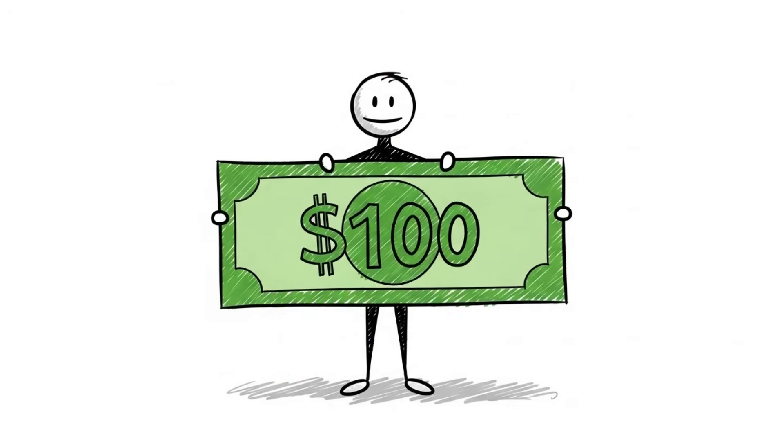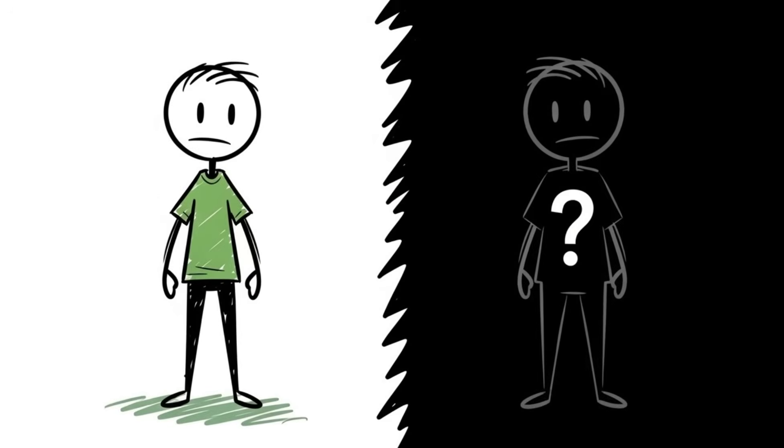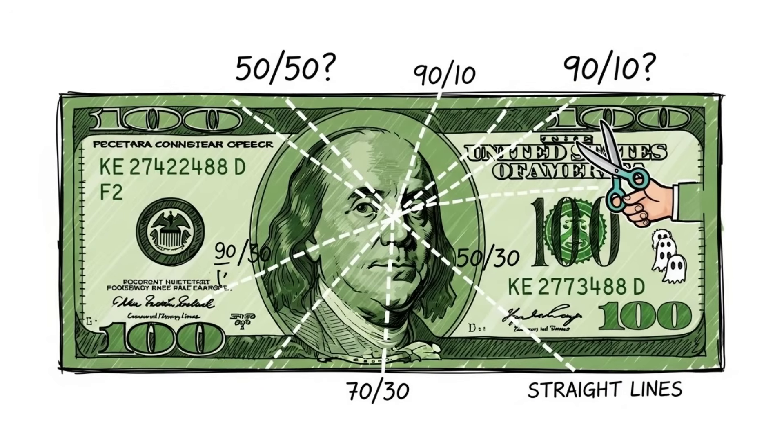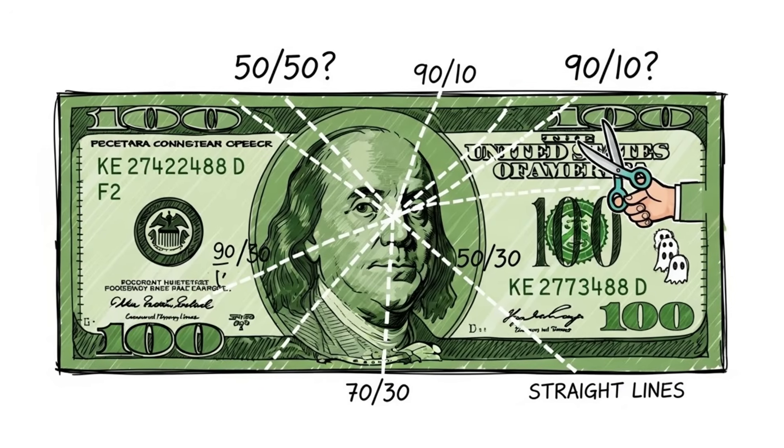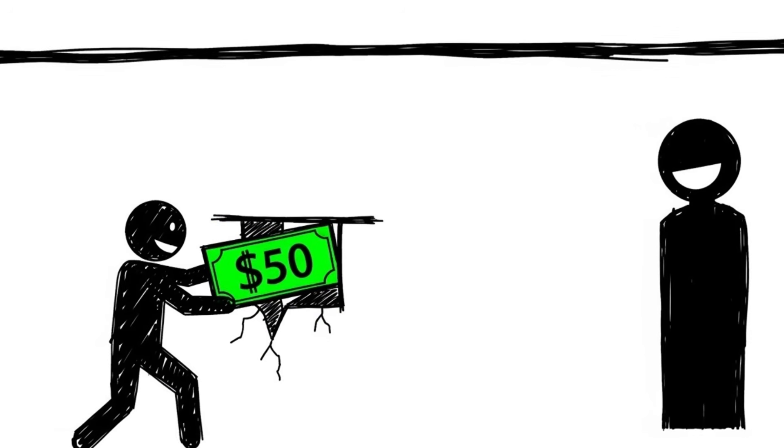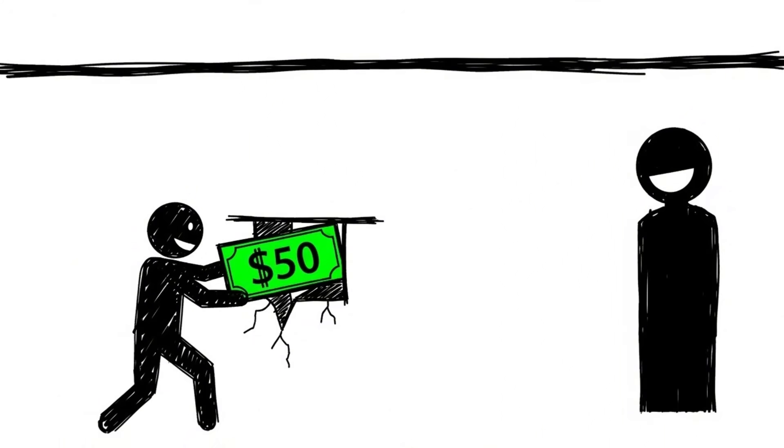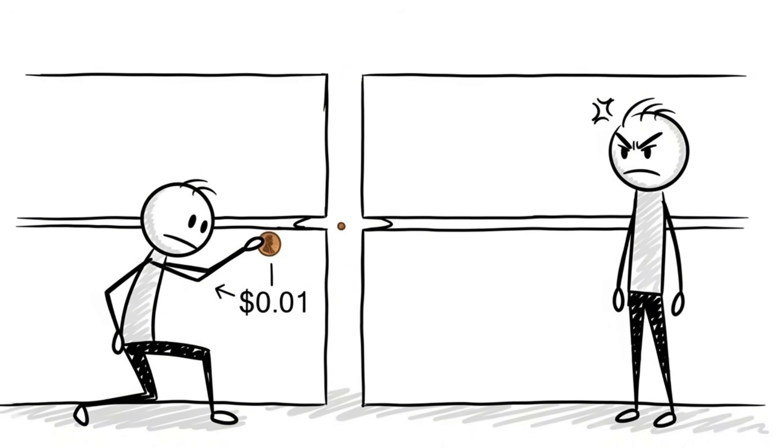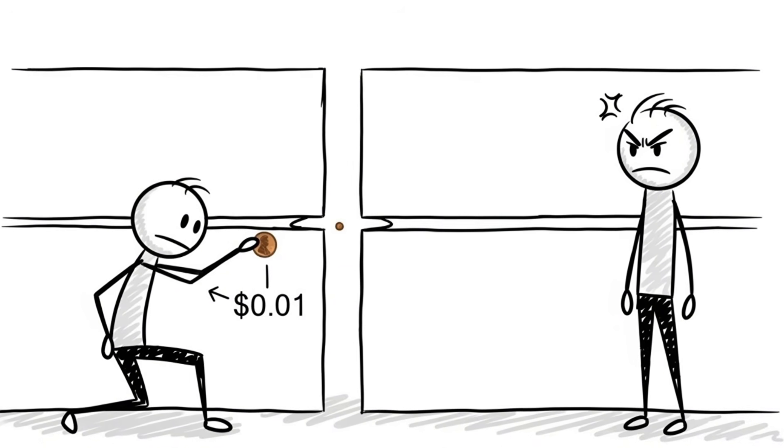Imagine I offer you $100, but there is a catch. I have to split this money with a stranger in another room. I can offer that stranger any amount I want, from one penny to the full $100. If the stranger accepts my offer, we both get the money. If the stranger rejects my offer, neither of us gets anything. The stranger knows the total is $100.